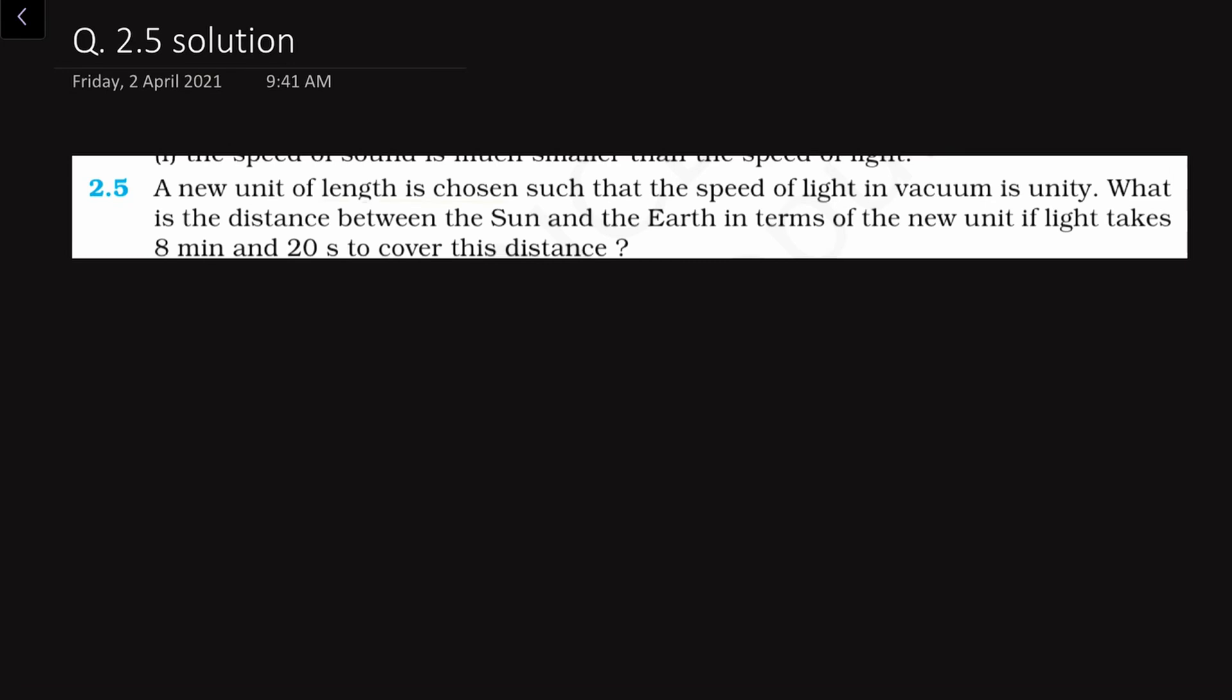So the problem is: a new unit of length is chosen such that the speed of light in vacuum is unity. Unity means its value is 1. What is the distance between the sun and the earth in terms of the new unit if light takes 8 minutes 20 seconds to cover this distance?